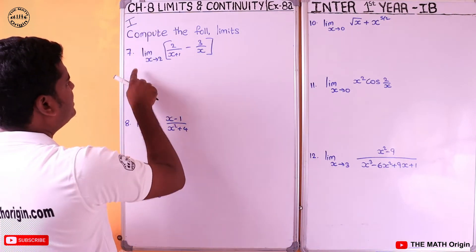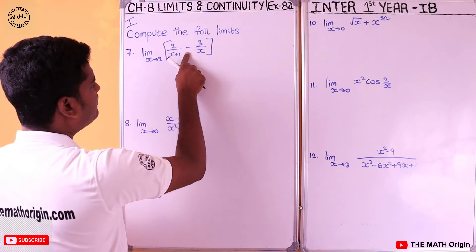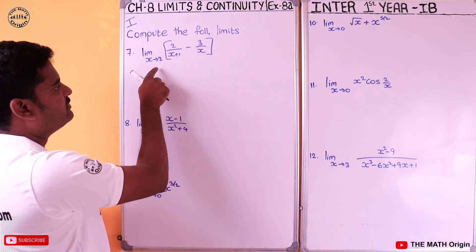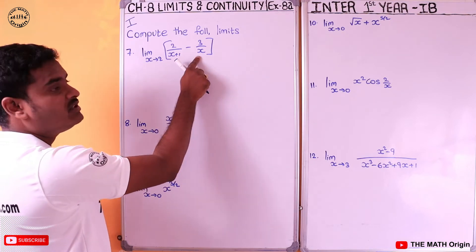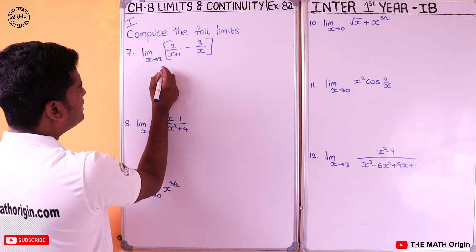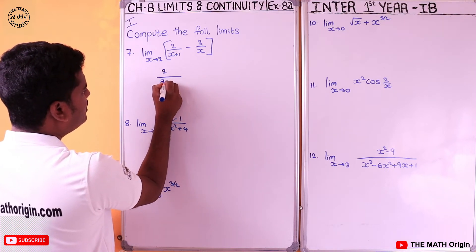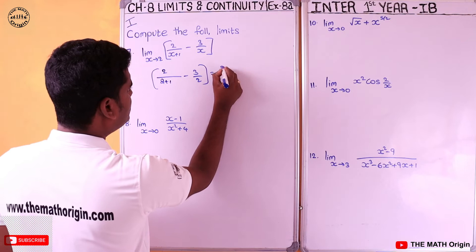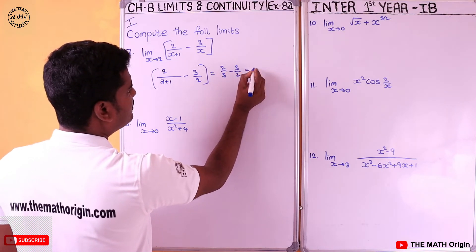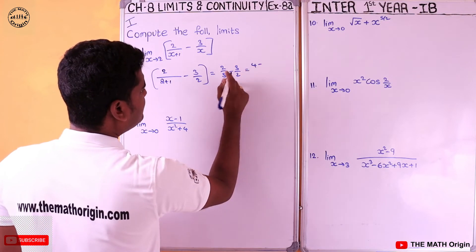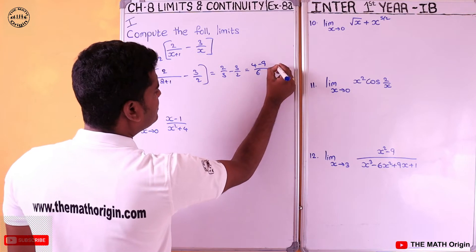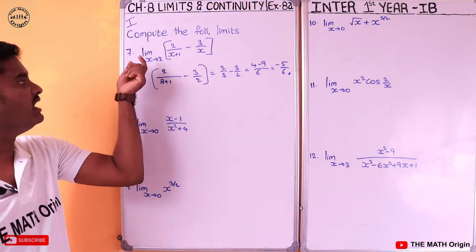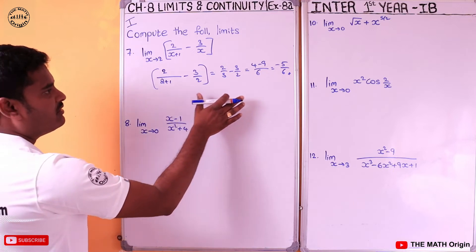Seventh question: limit x tends to 2 of 2/(x+1) minus 3/x. The denominator is not zero at x = 2, so we substitute directly: 2/(2+1) - 3/2 = 2/3 - 3/2. Cross multiplying: (4 - 9)/6 = minus 5 by 6. We completed the seventh question.